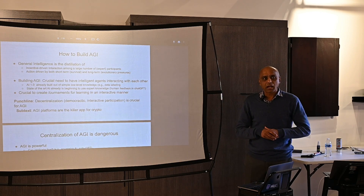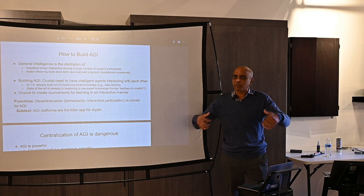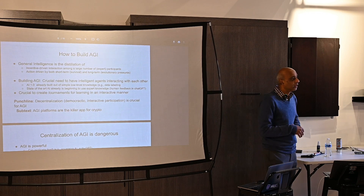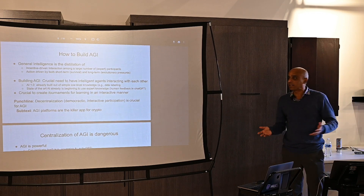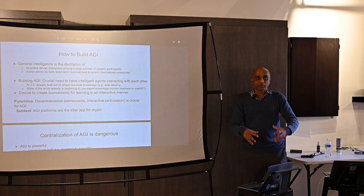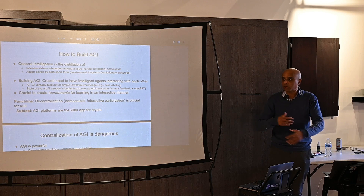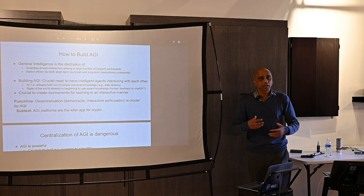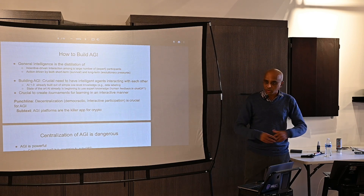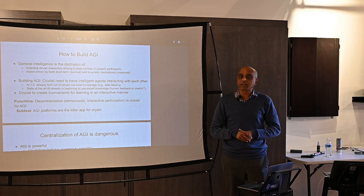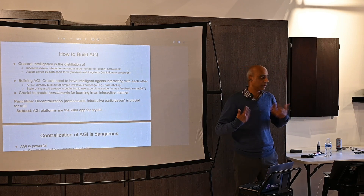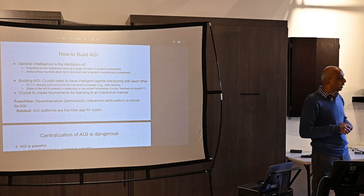This is also how evolution discovered intelligence. We put hydrogen, carbon, oxygen — the building blocks of chemistry — with evolutionary pressures: long-term reproduction, ability to survive, and short-term pressures like getting a good meal. Put them under this cooker, and evolution produces intelligence. General intelligence arrives, and objects like us get out of this evolution.